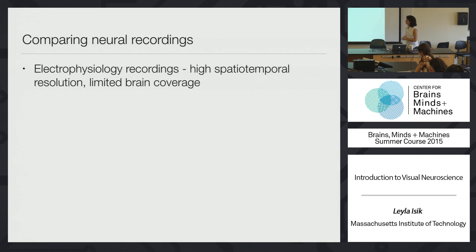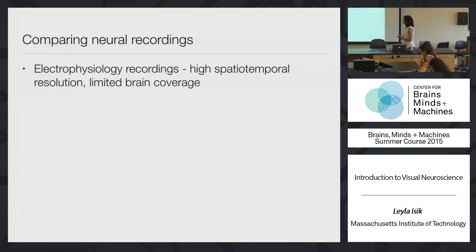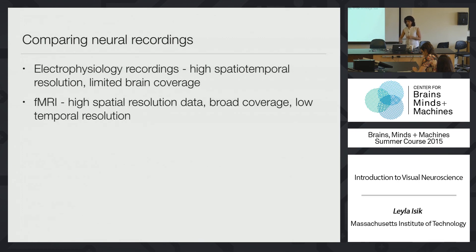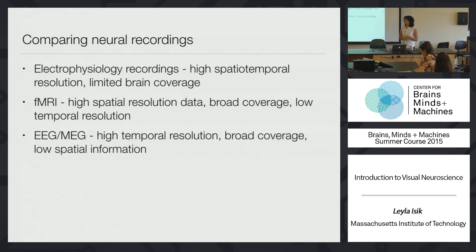To summarize: invasive electrophysiology is the highest resolution data, both spatially and temporally. However, it's invasive — hard to test in humans — and you're limited by brain coverage, only being able to record from a couple of brain regions at once. fMRI has broad coverage and good spatial resolution but lower temporal resolution. EEG and MEG have high temporal resolution and broad brain coverage but low spatial information.